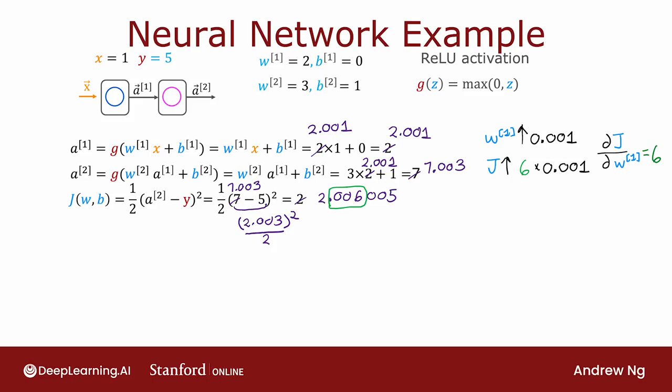And so the backprop procedure gives you a very efficient way to compute all of these derivatives, which you can then feed into the gradient descent algorithm or the Adam optimization algorithm to then train the parameters of your neural network. And again, the reason we use backprop for this is it's a very efficient way to compute all the derivatives of j with respect to w1, j with respect to b1, j with respect to w2, and j with respect to b2.